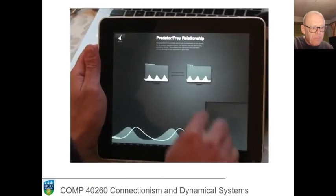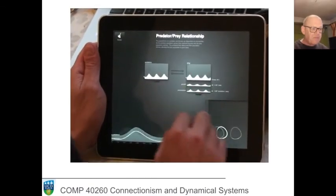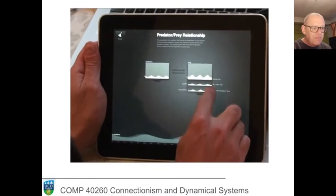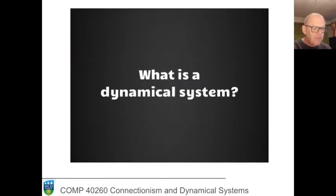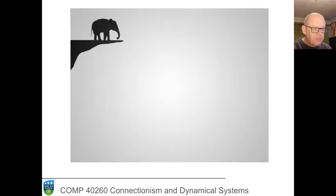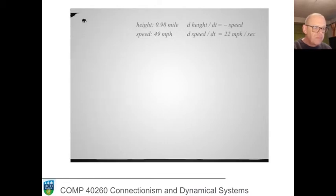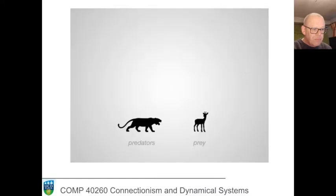I'd like to show you a new user interface for exploring dynamical systems. These things show up everywhere in science and engineering. A dynamical system is a set of variables and a set of rules saying how those variables change over time — those rules are called differential equations. For this demo, I'm going to show you a simple, well-known system called the predator-prey problem.